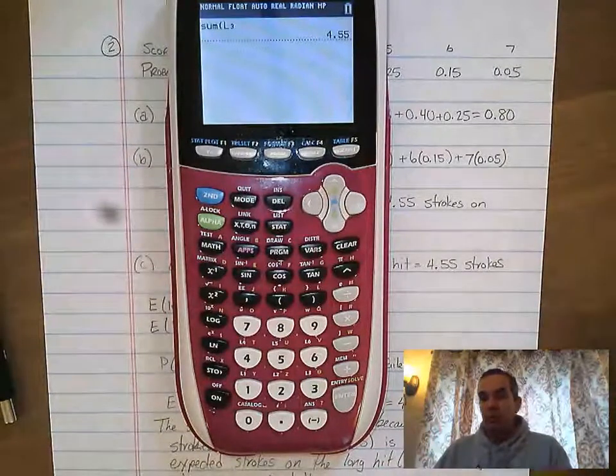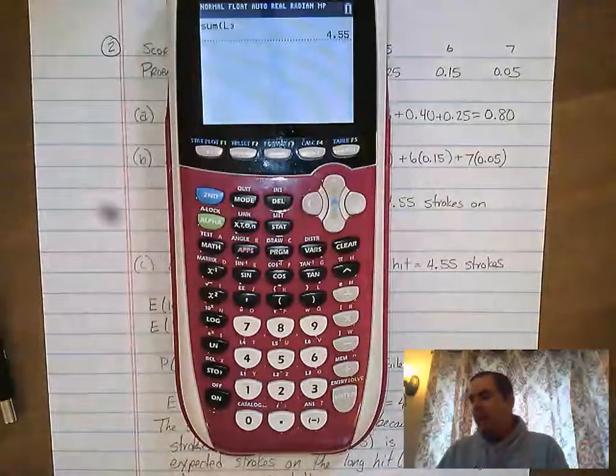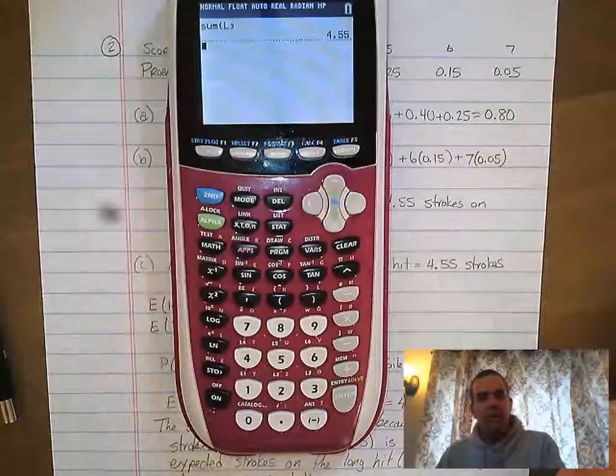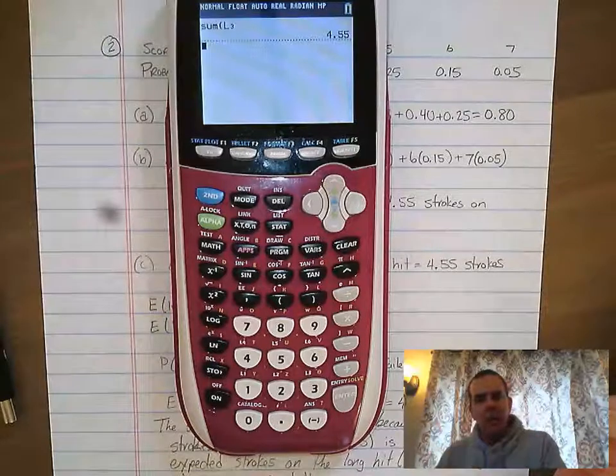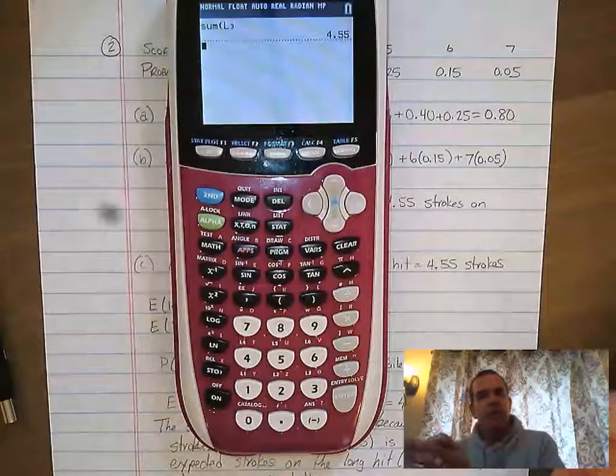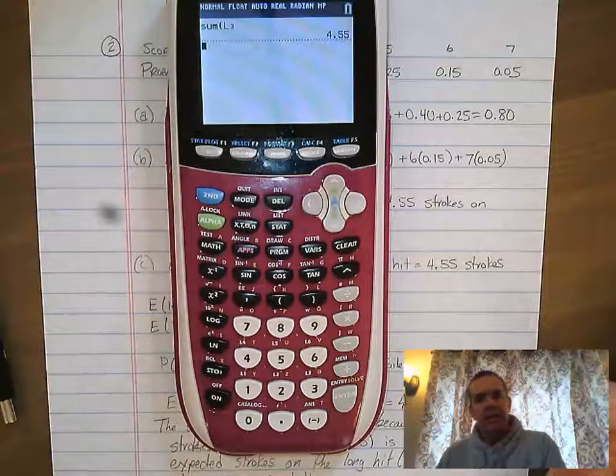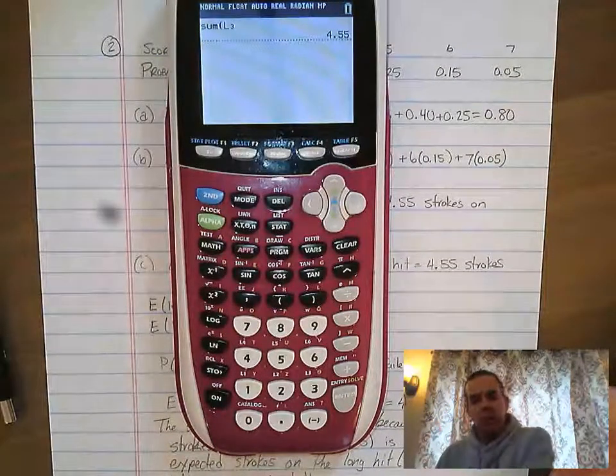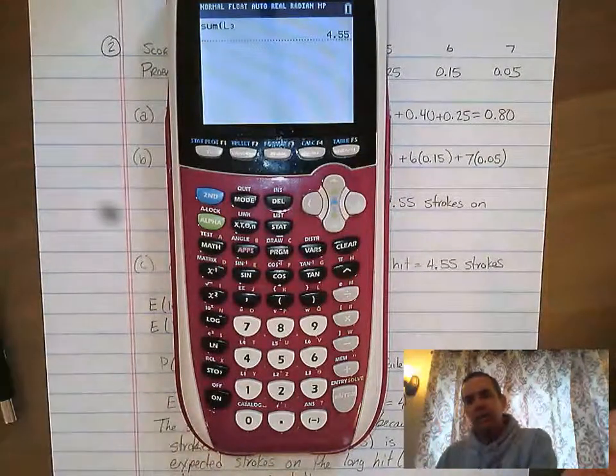So what we've learned from this problem is that on average, Miguel would have 4.55 strokes on the waterhole. Now, like I said, I want to show you how to get the standard deviation just while we're here and while we have the data in the calculator. The answer to the question is 4.55 strokes, but I want to add on as the extra review how to get standard deviation.